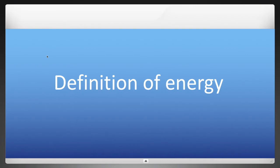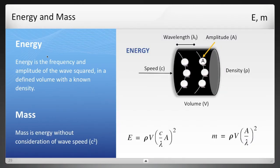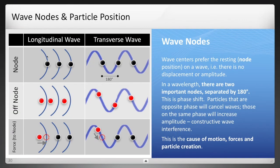So let's define energy now. And first, mathematically, and then we'll get broader as we go along. But mathematically, energy is the frequency. And remember, frequency is wave speed and wavelength. And it's the frequency and amplitude of the wave squared in a defined volume with known density. And mass is energy without consideration of wave speed for a standing wave. And forces are really just a movement of a wave center to minimize its wave amplitude.